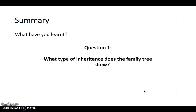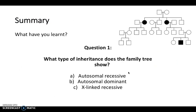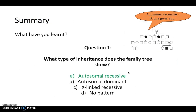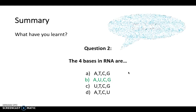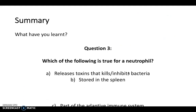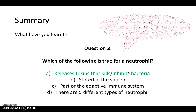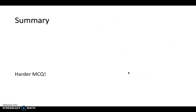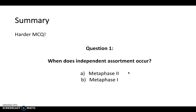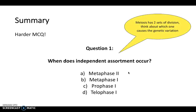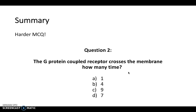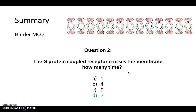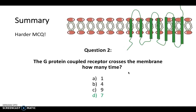Unfortunately we're running out of time, so let's quickly review some questions from the start of these videos. The four bases in RNA are A, U, C, and G. For a neutrophil, they release toxins that kill or inhibit bacteria. When does independent assortment occur? Remember, meiosis has two sets of division — it occurs in metaphase one. And the G-protein coupled receptor crosses the membrane seven times.